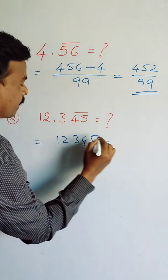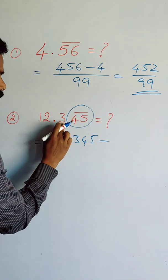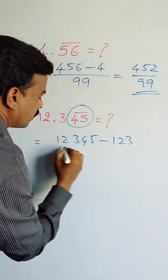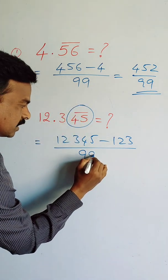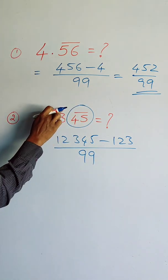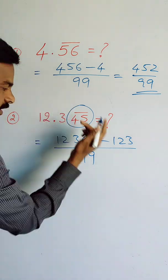Without the bar you subtract. One two three, that means without bar you subtract. Two digits of bar here, so two nines will come, and one digit has no bar after decimal point.